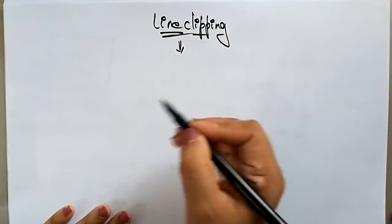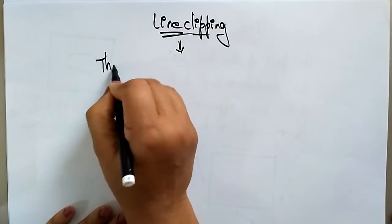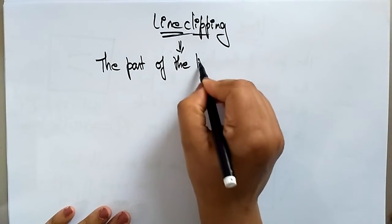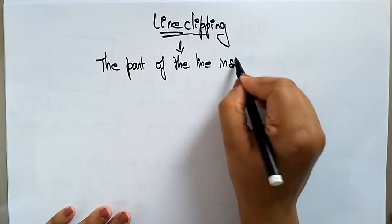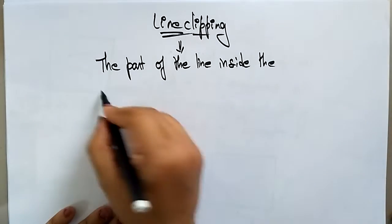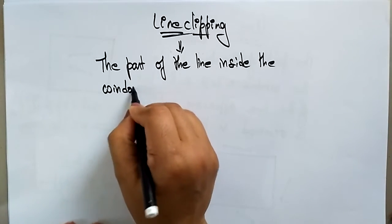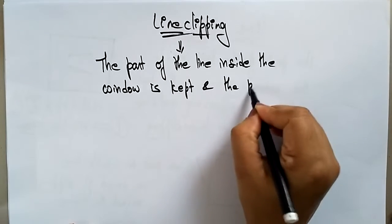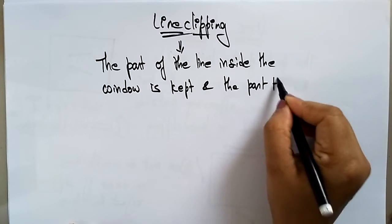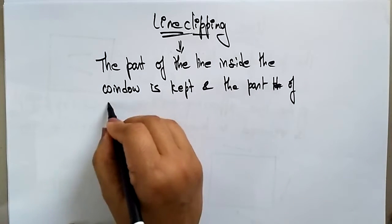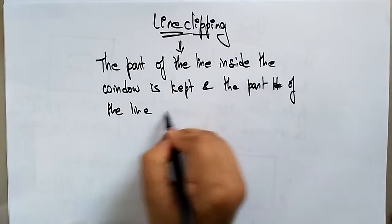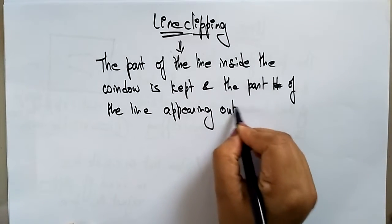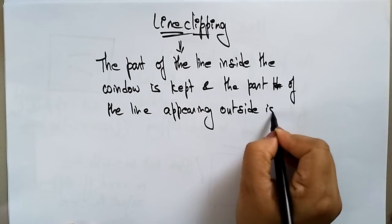In line clipping, the part of the line inside the clipping window is kept, and the part of the line appearing outside is removed.